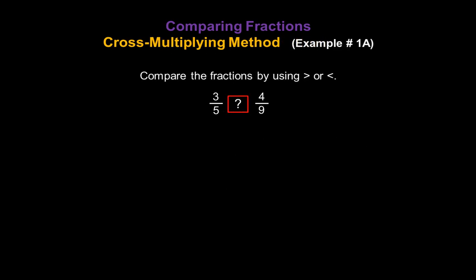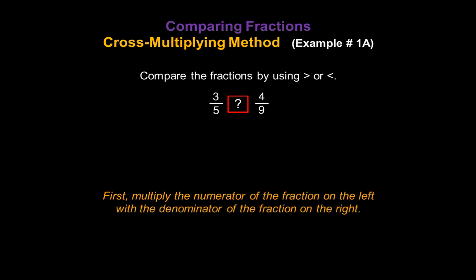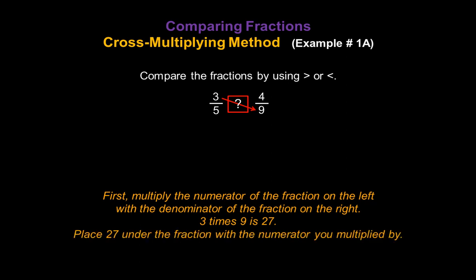Let's do an example. Compare the fractions by using the greater than or less than symbol — we're going to compare 3 fifths with 4 ninths. First, multiply the numerator of the fraction on the left, that's a 3, with the denominator of the fraction on the right, that's a 9. 3 times 9 gives us 27. This is a key step: the 27 is placed under the fraction with the numerator you just multiplied by, which is the 3 fifths fraction. So 27 is associated with 3 fifths.